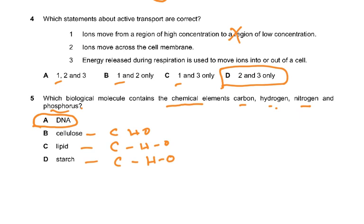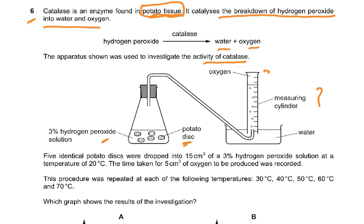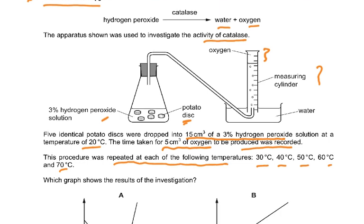Question 6: catalase is an enzyme found in potato tissue that catalyzes the breakdown of hydrogen peroxide into water and oxygen. The apparatus uses three percent hydrogen peroxide, potato discs, a measuring cylinder, and a water displacement method to collect oxygen. Five identical potato discs are dropped into 15 cm³ of three percent hydrogen peroxide at 20°C, and the time taken for 5 cm³ of oxygen to be produced is recorded. The procedure is repeated at 30, 40, 50, 60, and 70°C.